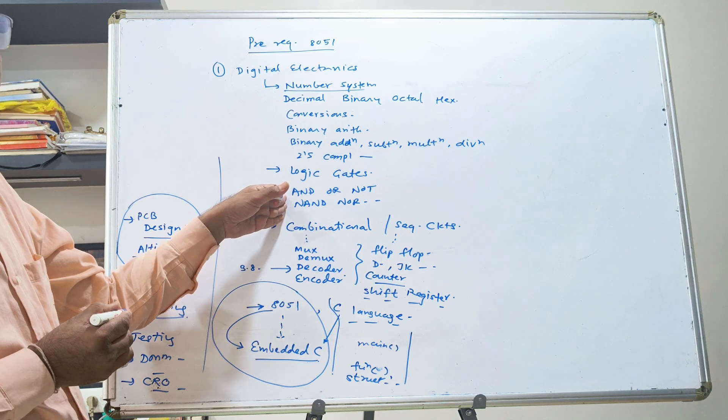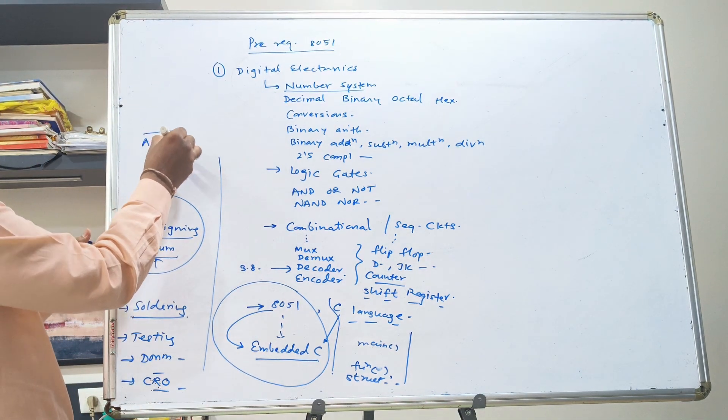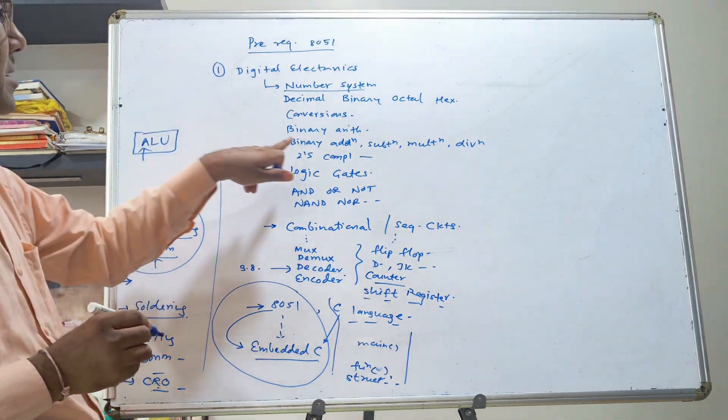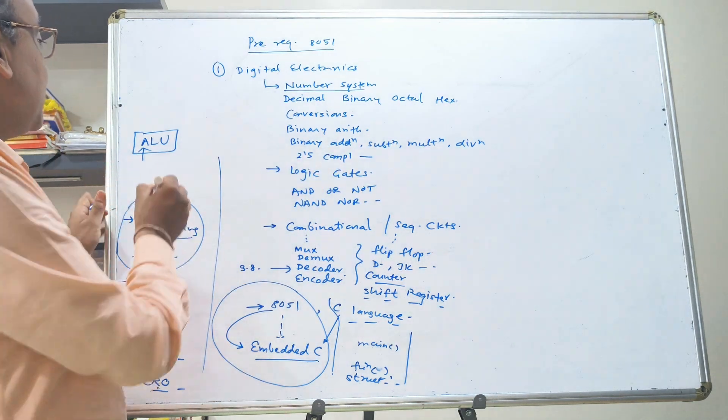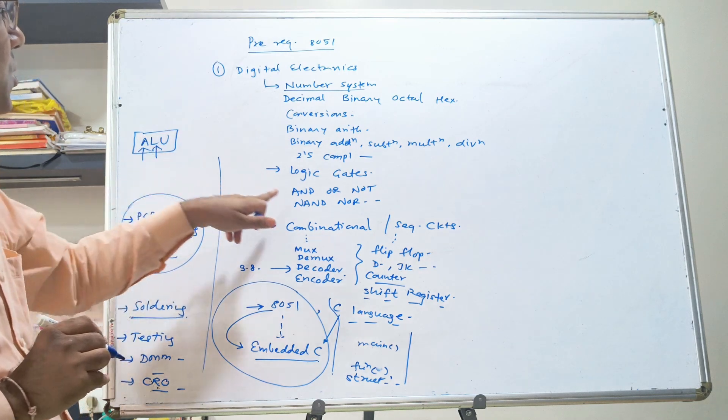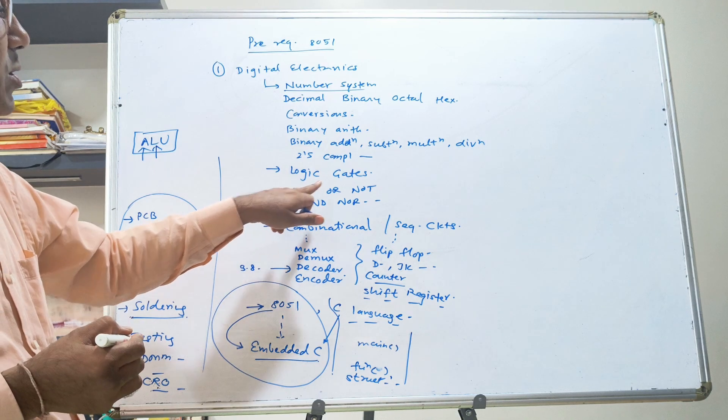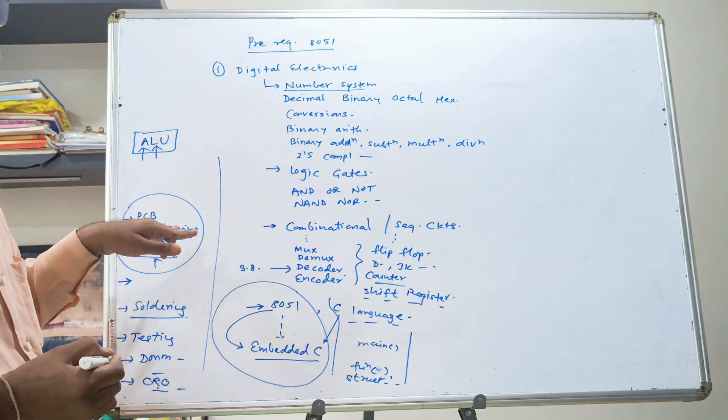When I say that 8051 is having arithmetic and logic unit, I assume that you know arithmetic operations like binary addition, subtraction. You know the two's complement. When I say it has a logic unit, I assume that you know what is logic. It means what is ANDing, what is ORing and all those. So you will understand the instructions easily.